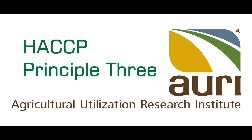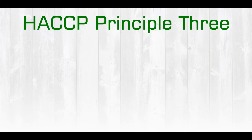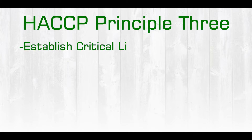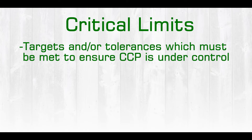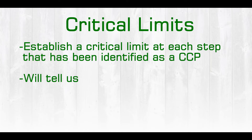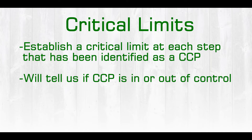Welcome to video 4, where we will discuss HACCP principle 3, which is to establish critical limits. Critical limits are targets and/or tolerances which we must control to ensure that the critical control point is under control. Therefore, we would establish a critical limit at each step that has been identified as a critical control point.